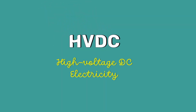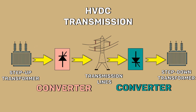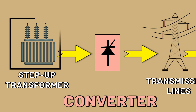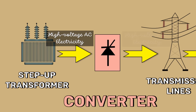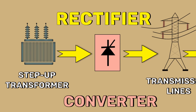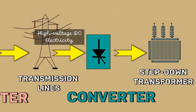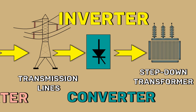HVDC transmission is very similar to HVAC transmission, except that it requires a converter at each end of the transmission line. The sending end converter receives the input from the step-up transformer and converts this high voltage AC electricity into high voltage DC electricity — this converter is called the rectifier. The receiving end converter receives the high voltage DC input and converts it back to high voltage AC; this converter is called the inverter.